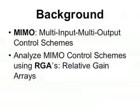One method that is used to design and analyze MIMO control schemes for steady state processes is by using Relative Gain Arrays, or RGAs. An RGA gives a quantitative approach to analysis of interactions between control loops. Then variables can be manipulated and controlled to create a control scheme.